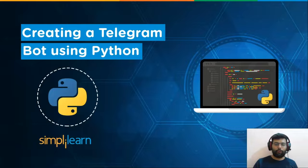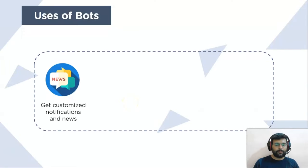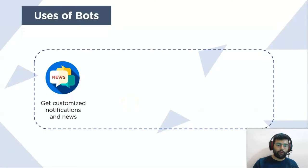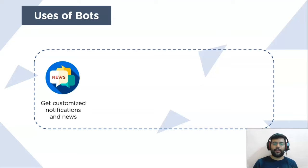Now let's understand the uses of bots. The first use of bots is to get customized notifications and news. A bot can act as a smart newspaper, sending relevant content to its subscribers as soon as it's published.